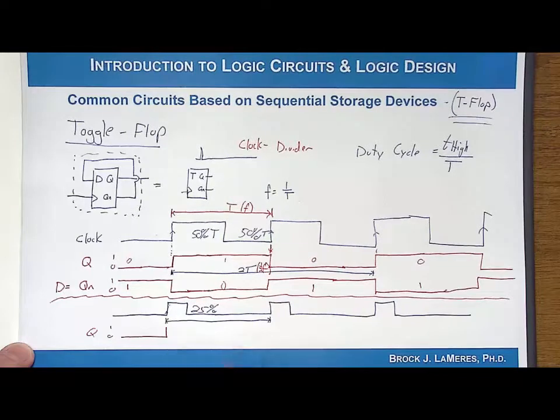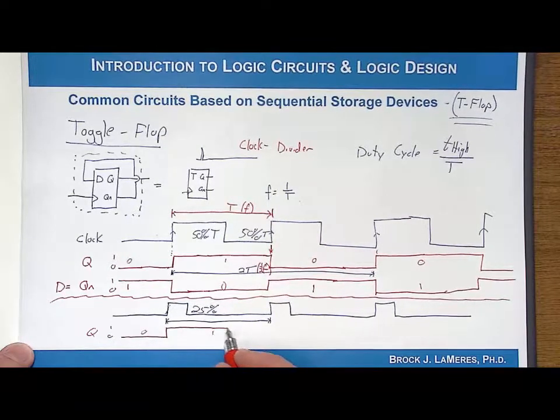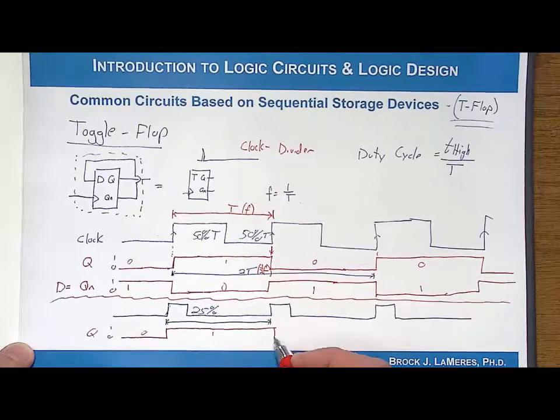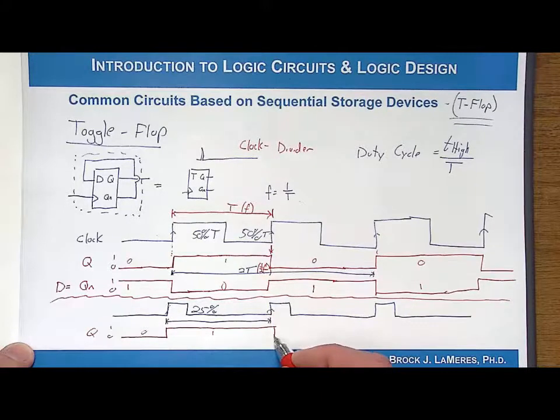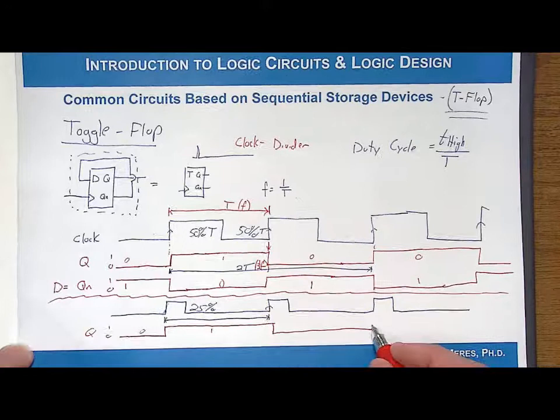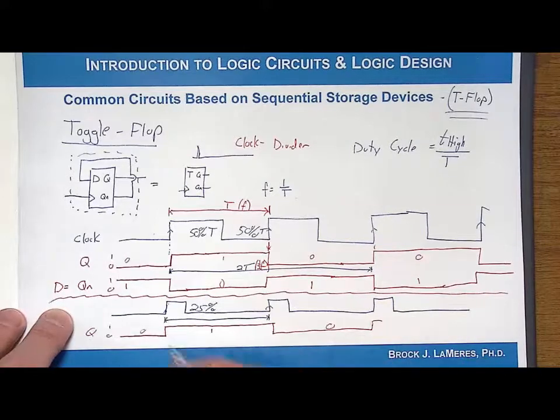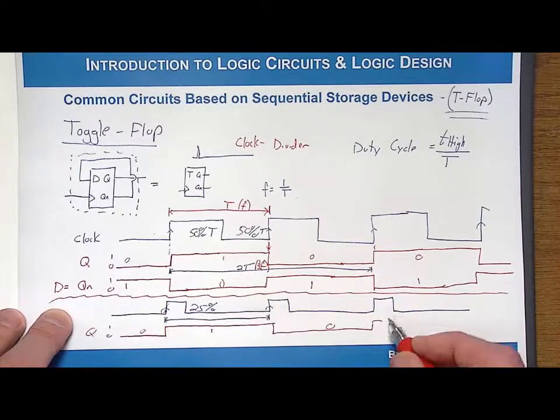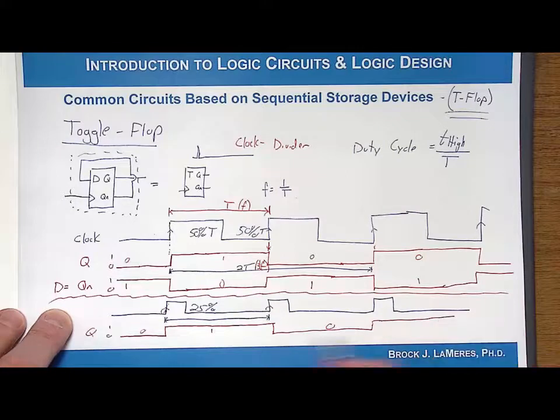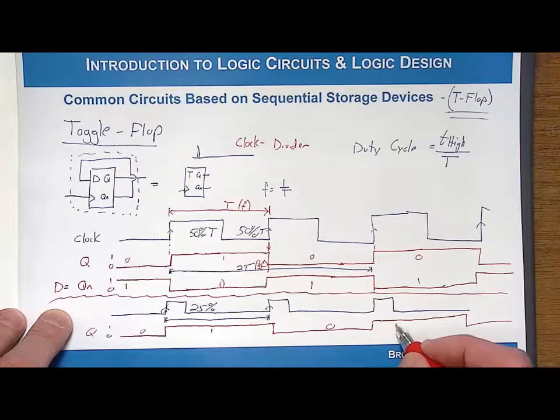So I went from a 0 to a 1 and then it's going to hold that value until the next rising edge of a clock. Since it only is sensitive to one of these edges, it doesn't care what the duty cycle of the incoming clock is, it's going to produce exactly a 50% duty cycle.